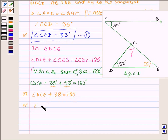Or we can say that angle DCE is equal to 92 degrees.